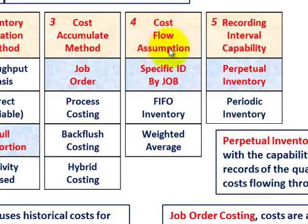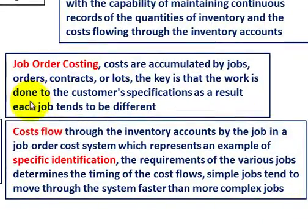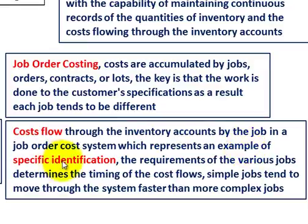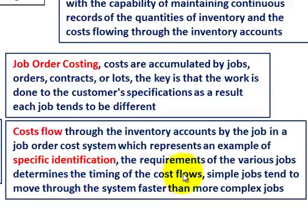Now let's look at our cost flow assumption. In this case, it's specific identification by the job. Costs flow through the inventory accounts by job in a job order cost system, which represents an example of specific identification. With job order, you use specific identification, and it requires the various jobs to determine the timing of cost flows. Simple jobs tend to move through the system faster than more complex jobs.